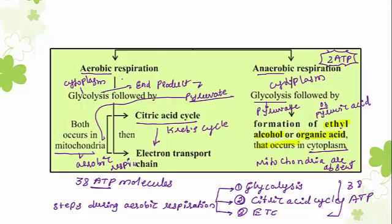In anaerobic respiration, since oxygen is not involved, only two ATP molecules are generated and incomplete or partial oxidation of glucose occurs. The pyruvate produced in the cytoplasm either is converted into ethyl alcohol or is converted into organic acid.